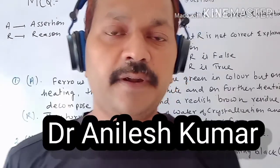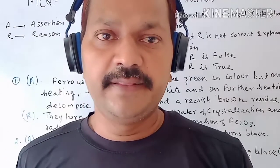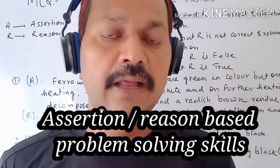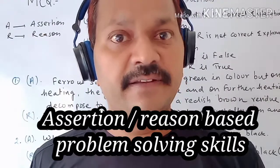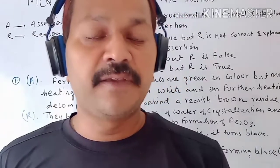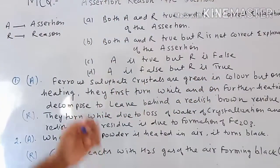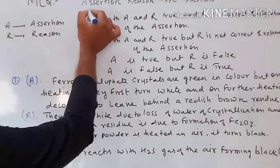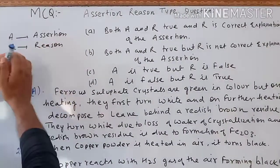Class 10 students, this is chapter Chemical Equations and Reactions. Today we are taking up problem solving skills in terms of Assertion and Reason type questions. This type of question is asked in the MCQ section. So students, it is part of the MCQ — multiple choice question — section.